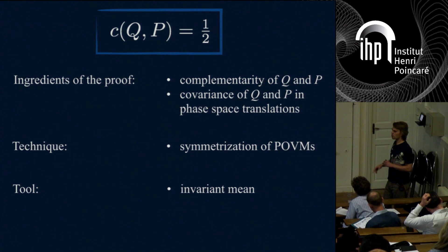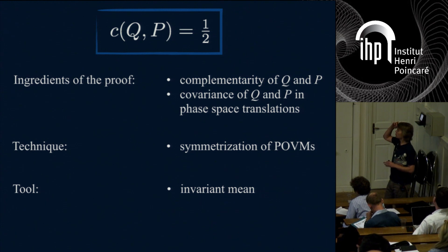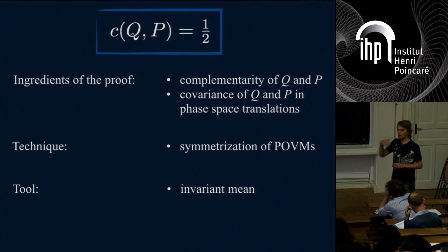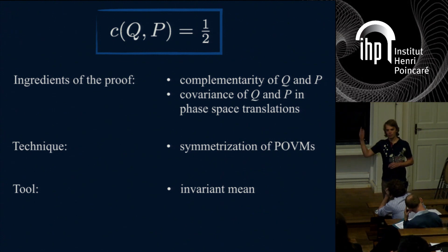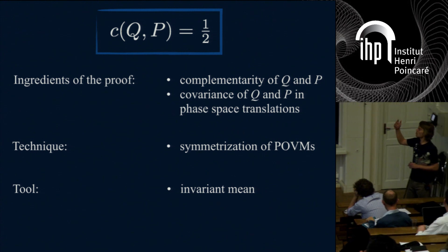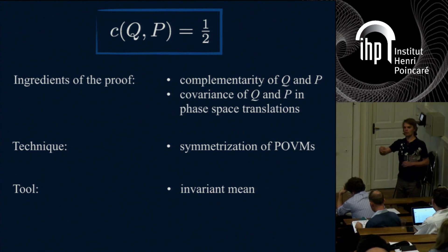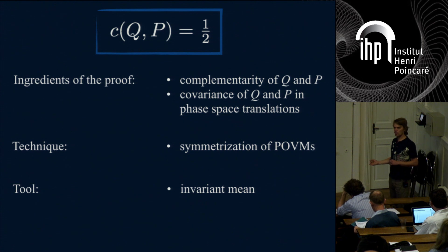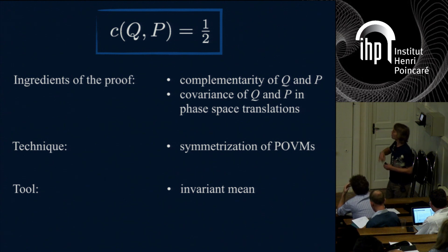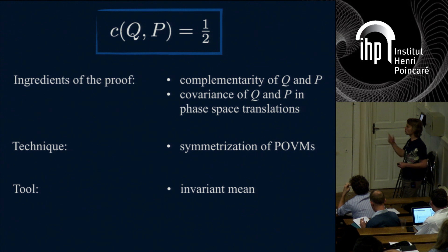I want to tell you the main parts of the proof, not all calculations, but some nice elements. We want to prove that the compatibility degree of Q (position) and P (momentum) is one-half, meaning they are as incompatible as any pair of observables can possibly be. The ingredients: complementarity of Q and P, covariance under phase-space translations, and the technique of symmetrization of POVMs using an invariant mean.